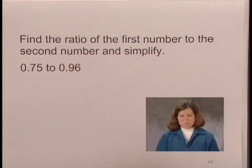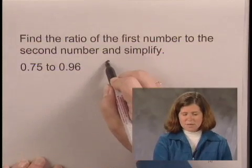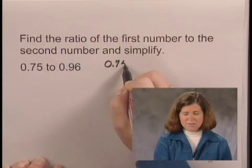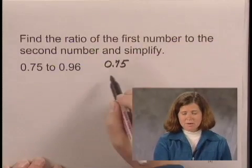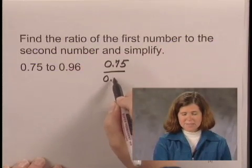To write this ratio in fraction notation, we write the first number, 0.75, as the numerator, and the second number, 0.96, as the denominator.